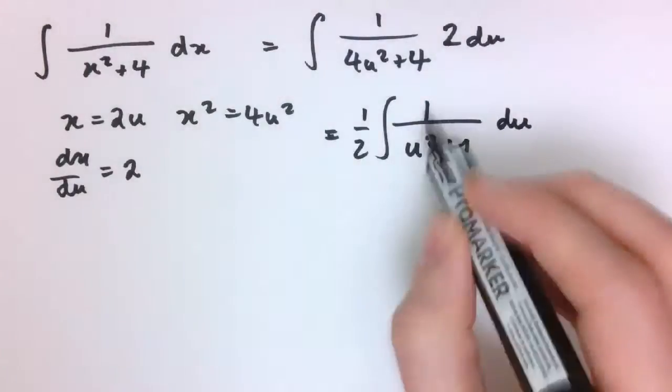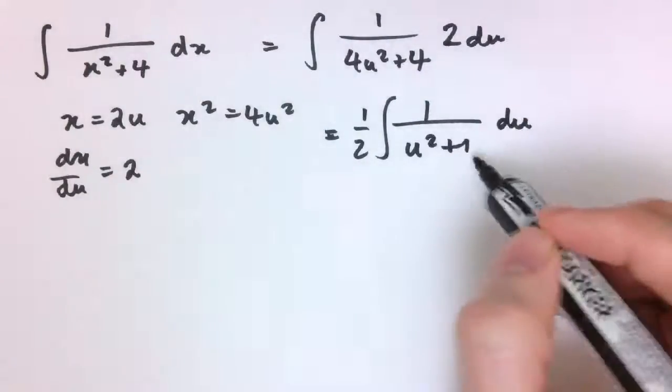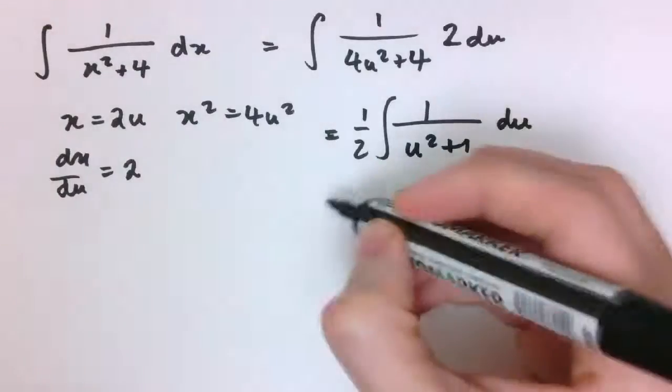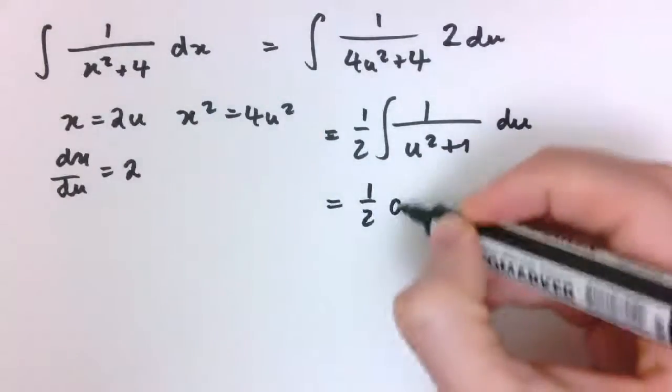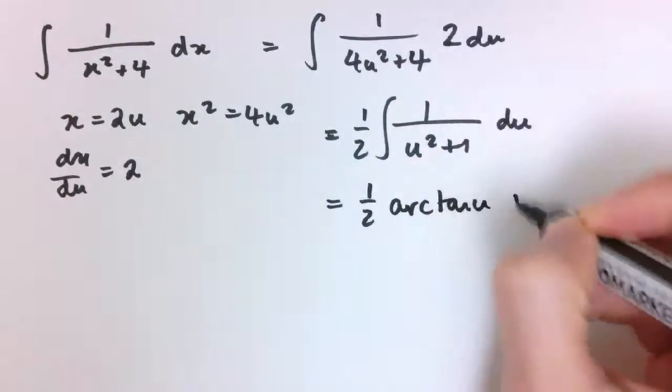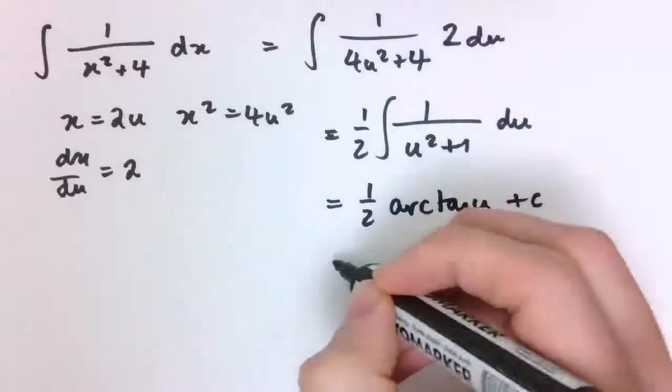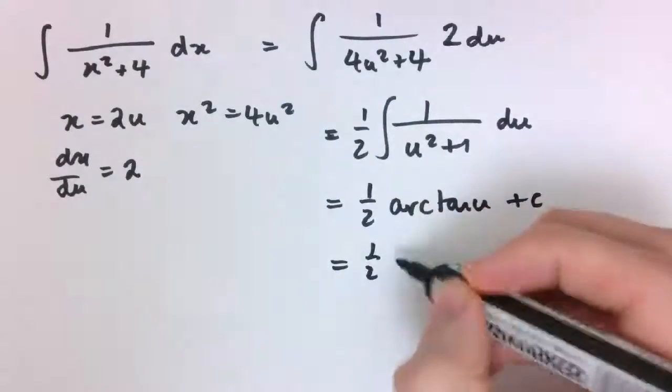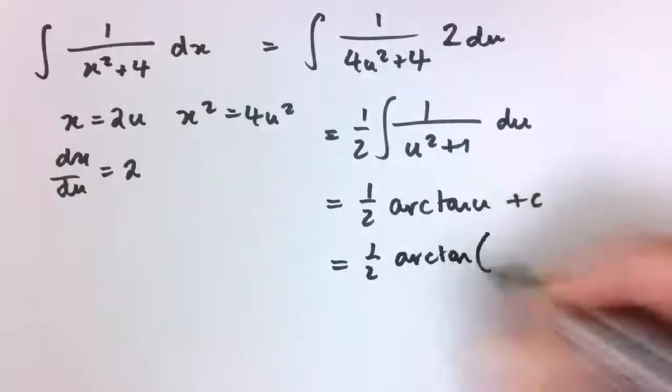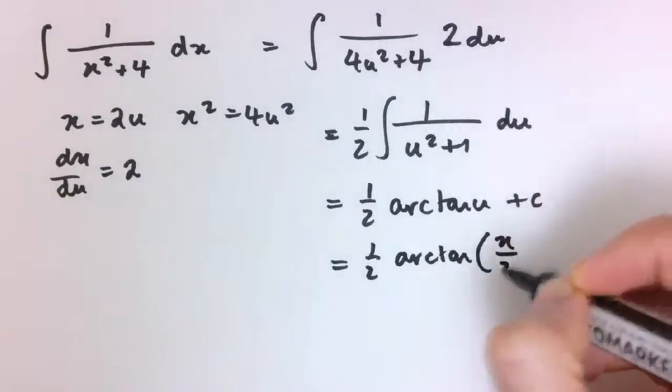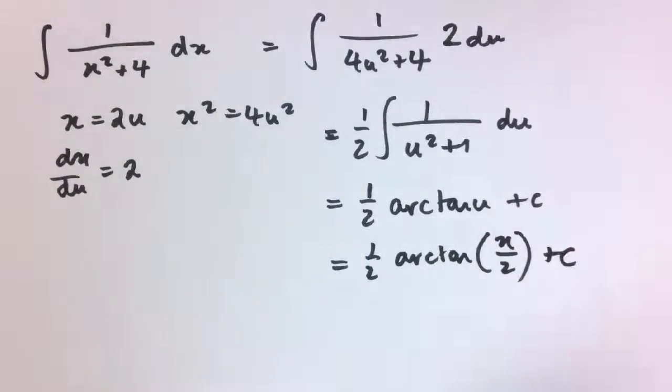And we know that the integral of 1 over u squared plus 1 du from the first example is arctan u plus c, and so putting this back in terms of x, we have 1 half arctan x over 2 plus c.